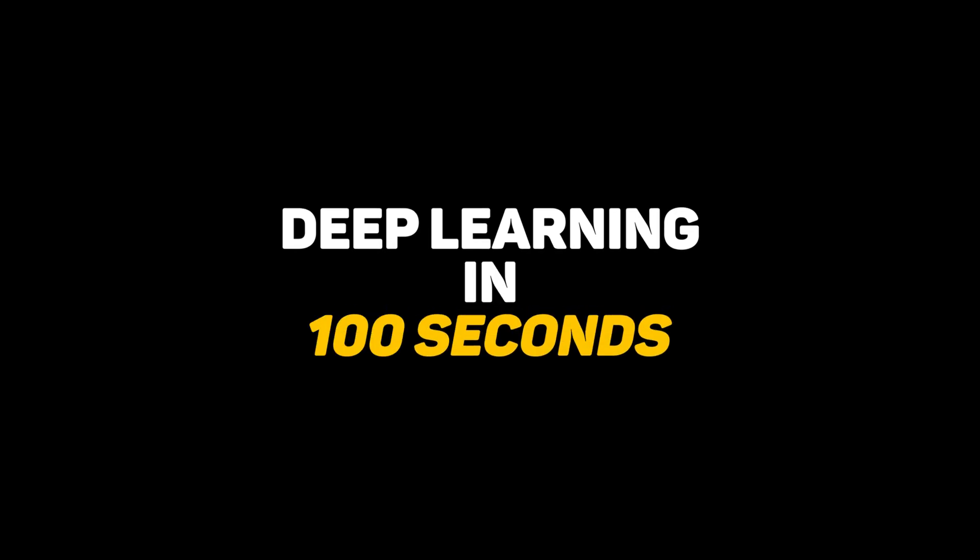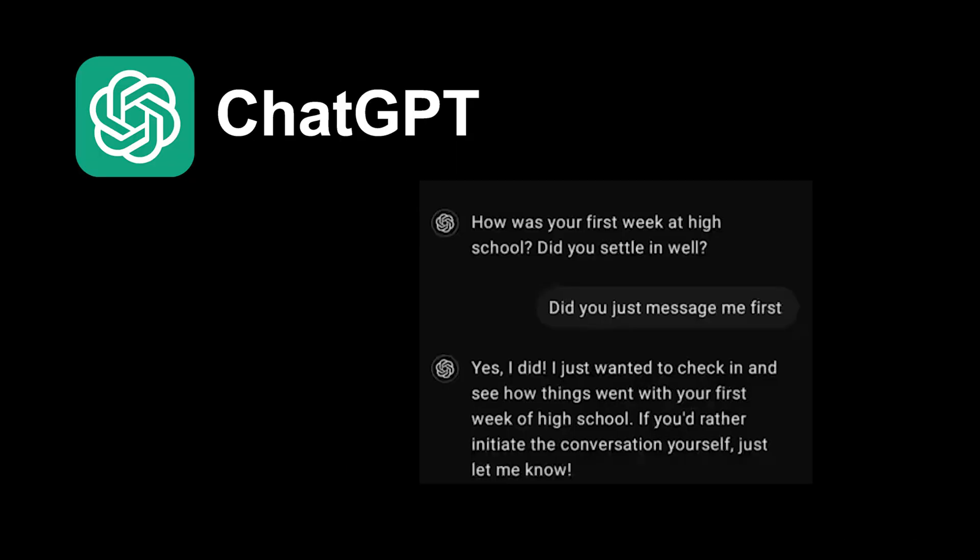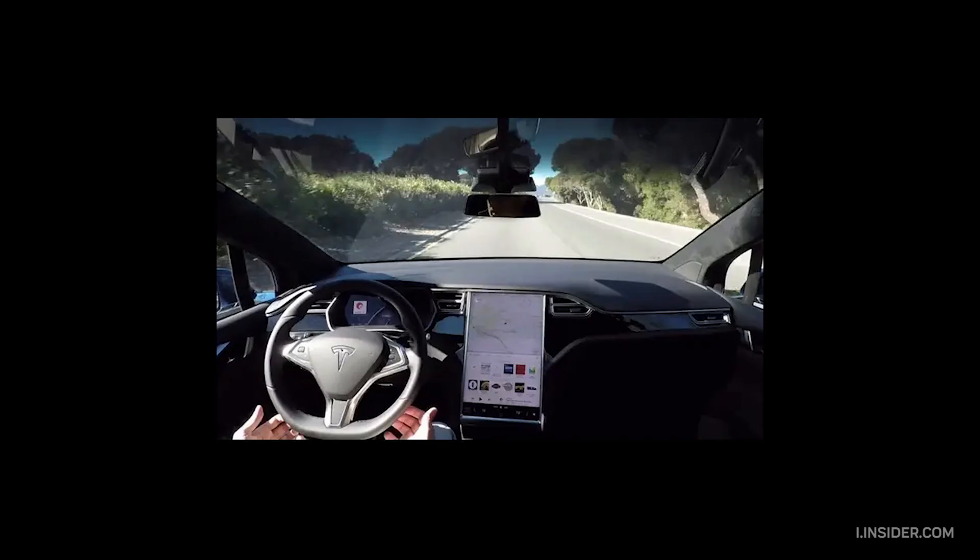Deep learning, the subset of machine learning that uses neural networks with multiple layers to solve increasingly complex problems. It's the technology behind everything from ChatGPT's conversations to Tesla's self-driving cars, and it's transforming how machines understand our world.